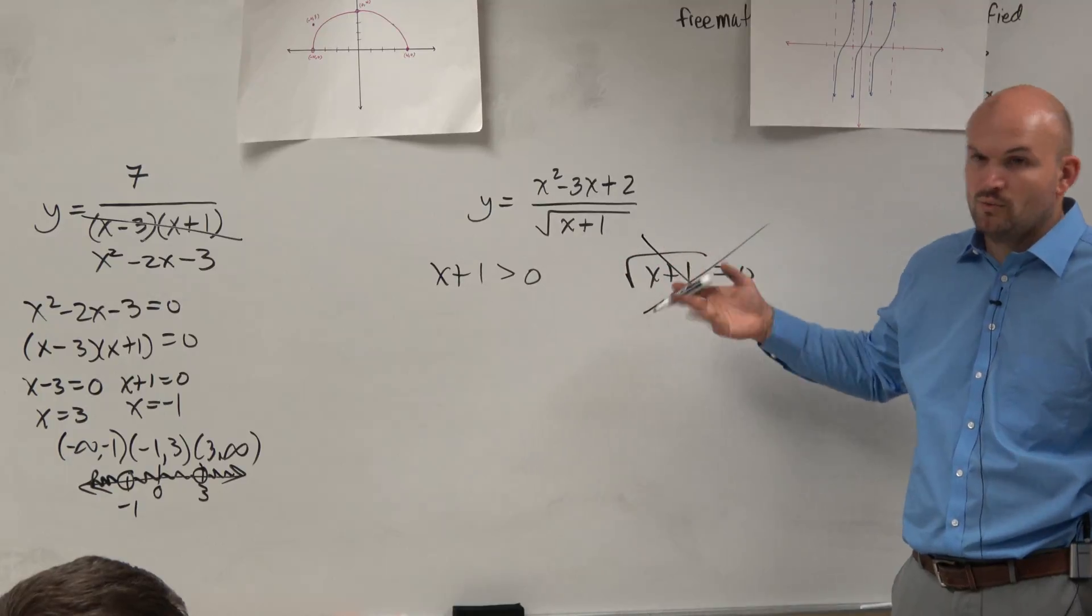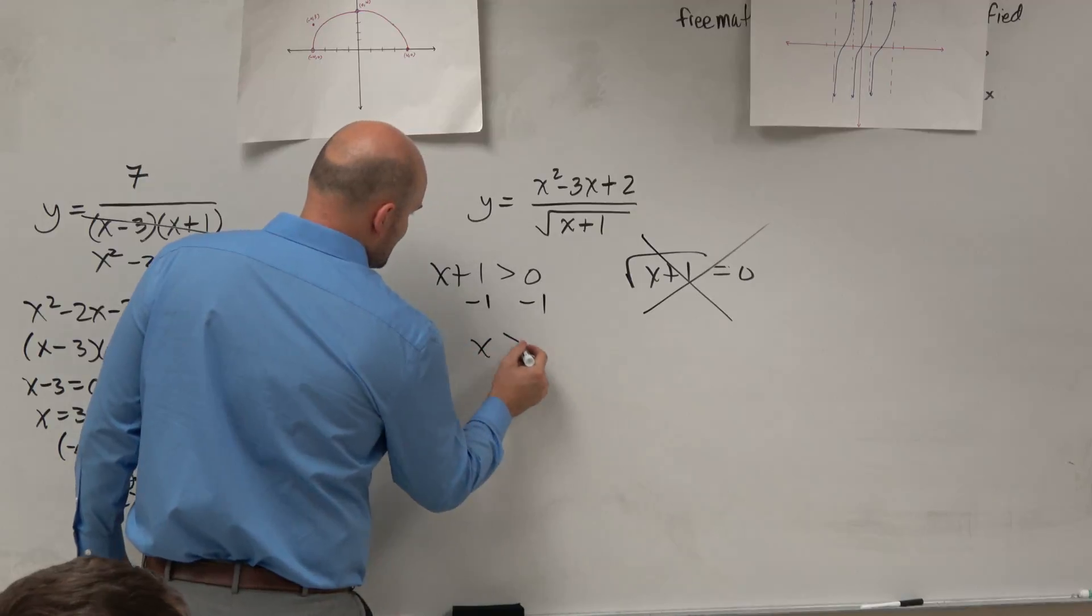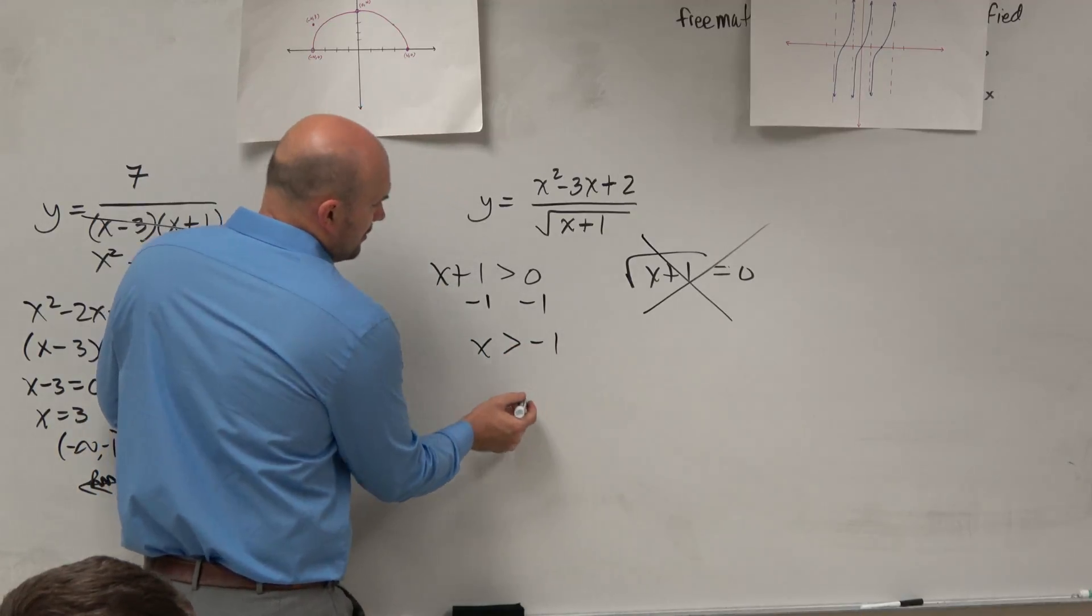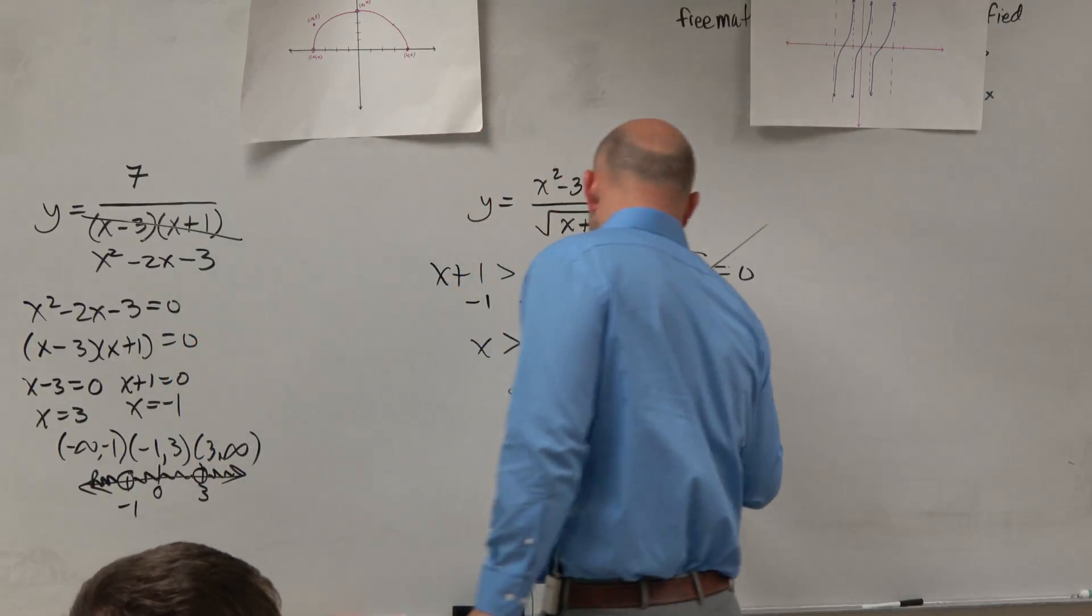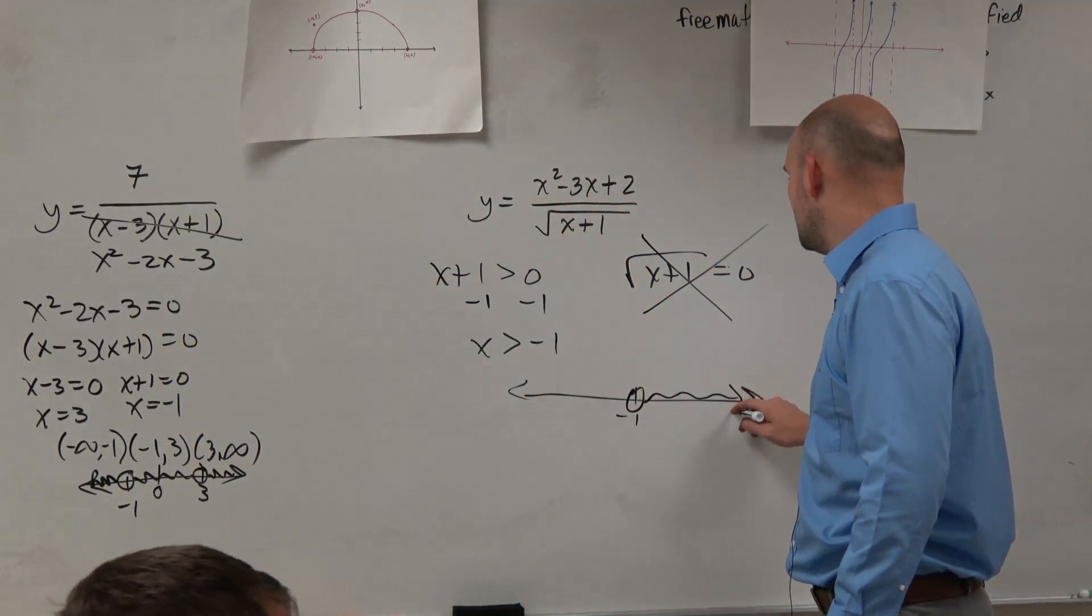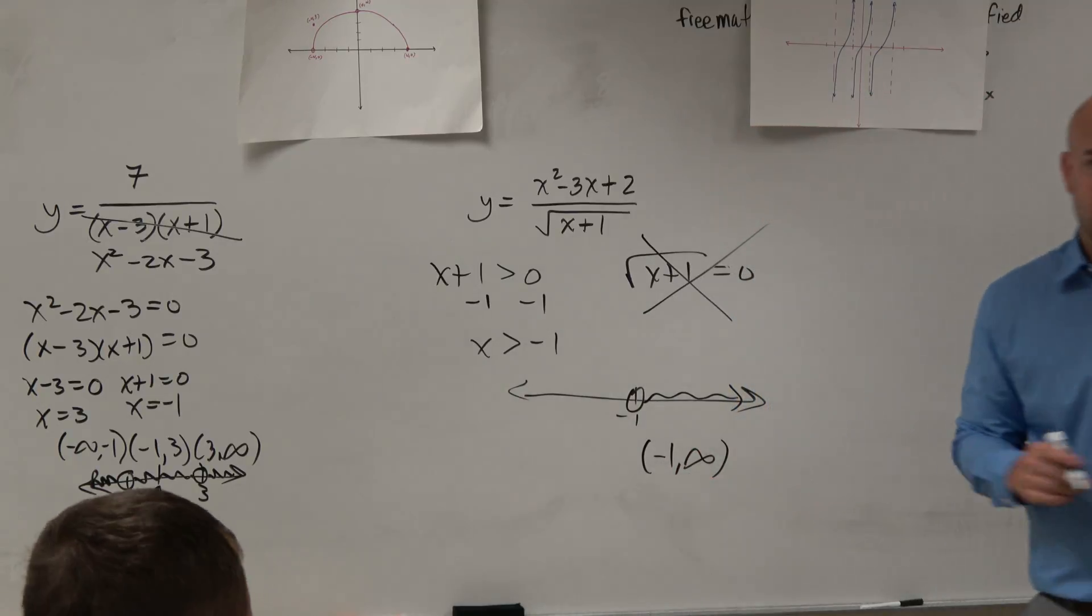Because we don't care about when it's equal to 0. Because that inequality would cover it. So, subtract 1, subtract 1, x has to be greater than negative 1. All right, so we graph that on a number line, negative 1, that's going to be an open circle, x values that are greater than, so that would be from negative 1 to infinity. Just like that.